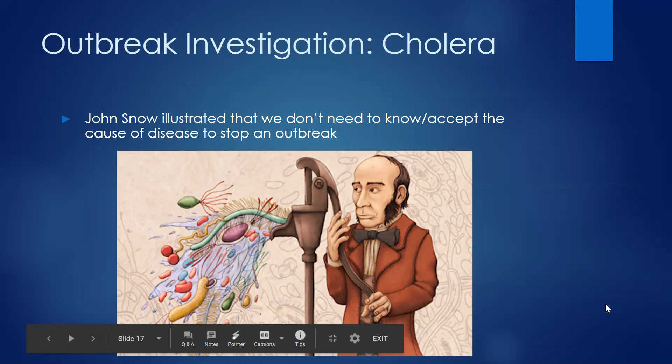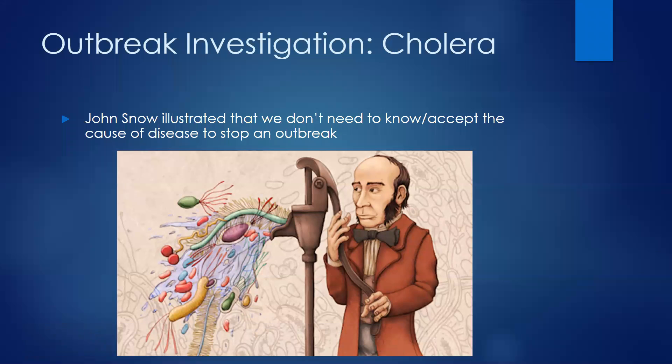The last two steps are to implement control and prevention strategies. If we know it's the fruit salad, and if people in the kitchen were not washing knives between, say, cutting meat and then cutting fruit, that's clearly a violation of good food safety practice. We'd want to address that, or if things weren't held at the right temperature, we'd want to intervene to address that so it didn't happen again.